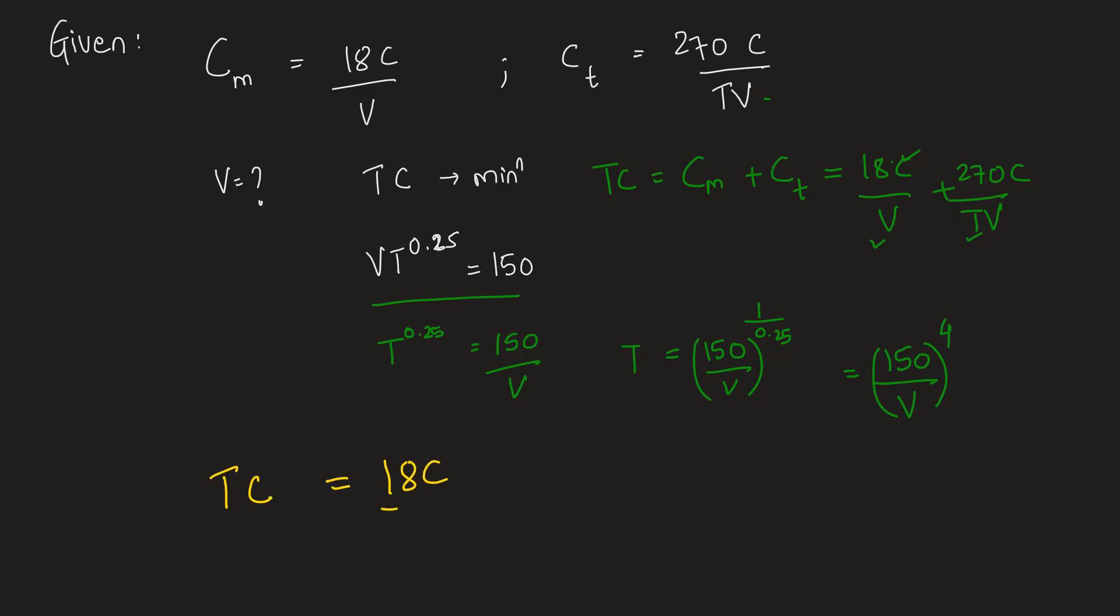Total cost is equal to 18C/V plus 270C divided by [150^4 times T], which gives us V/V^4, which can be written as 1/V^3. So this becomes 18C/V plus 270CV^3/150^4.